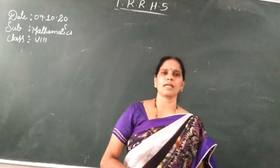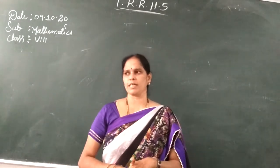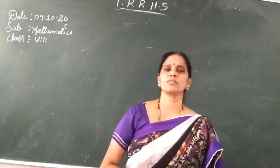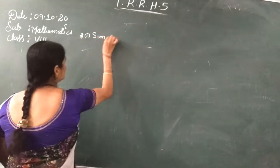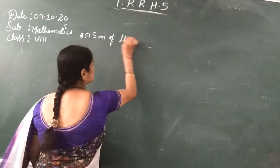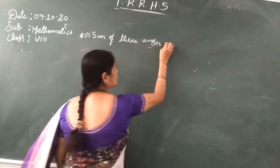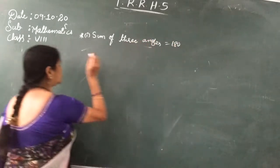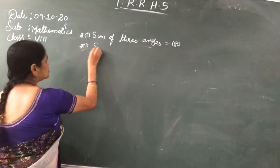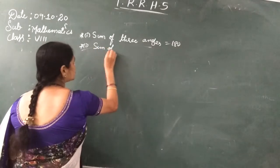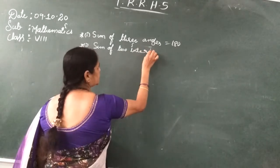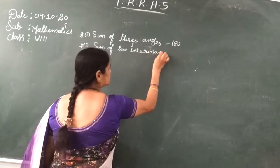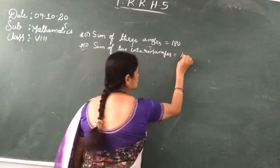In the previous class, in seventh class, we learnt triangles. In a triangle, some properties are there. What are the properties? The first one is: sum of three angles is equal to 180 degrees. And one more point is: the sum of two interior angles is equal to the exterior angle.